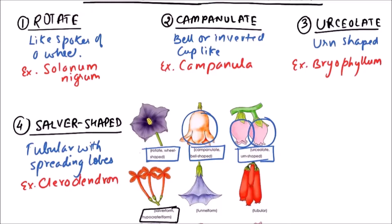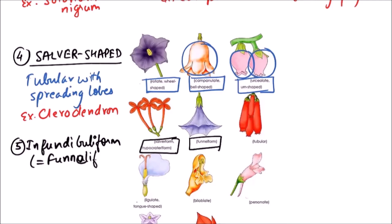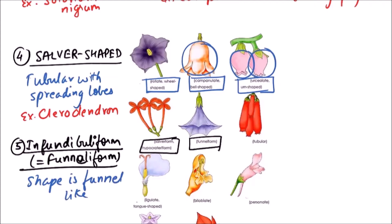The next one is Infundibuliform, also known as funnel-form. In this type, the shape is funnel-like, and the example includes Petunia.